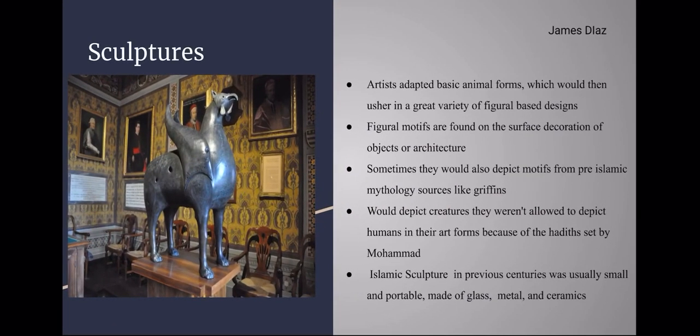As Islam spread throughout the world, it would reach Europe and lands with a rich history of sculptural tradition. Prior to these lands being converted, there were long-standing rules concerning artwork known as hadiths that would ban artists and sculptors from depicting humans and creatures. Despite this, groups such as the Taifa rulers from Spain and the Umayyads from Egypt adapted this rule to include sculpture in a small-scale and non-religious context.